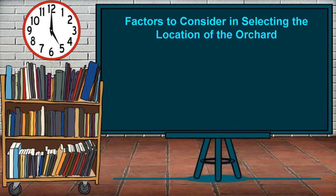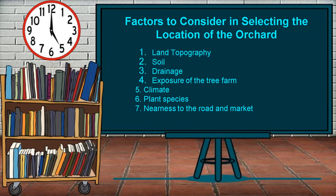Factors to Consider in Selecting the Location of the Orchard. Determine the likelihood of the planted trees to successfully grow by checking with the Bureau of Plant Industry. Choosing the right location is important when planting trees. The following are some factors to consider: land topography, soil, drainage, exposure of the tree farm, climate, the plant species, and nearness to the road and market.